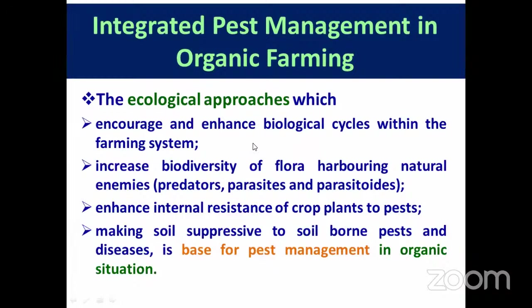We must increase the biodiversity of flora at our organic farm, as the diversity of natural enemies depends upon the diversity of flora. Natural enemies may be predators, parasites, or parasitoids of insect pests. A parasitoid is one which completes its life cycle within a single host. A predator is bigger than the size of its host and kills it instantly, while a parasite causes disease and is smaller than its host.